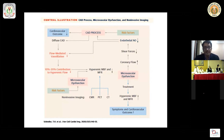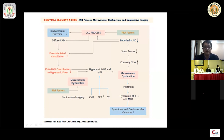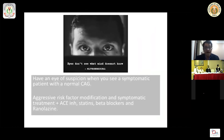The approach to Syndrome X: a patient with typical symptoms, ECG changes, and positive or equivocal stress test but a normal coronary angiogram may have microvascular dysfunction. In clinical practice, cardiac MR, PET, or CT are the imaging modalities preferred for these patients. PET and CMR are the most promising non-invasive modalities for diagnosis. Most importantly, maintain a high index of suspicion when you see a symptomatic patient with a normal angiogram. We are here not to treat angiograms — we are here to treat patients.